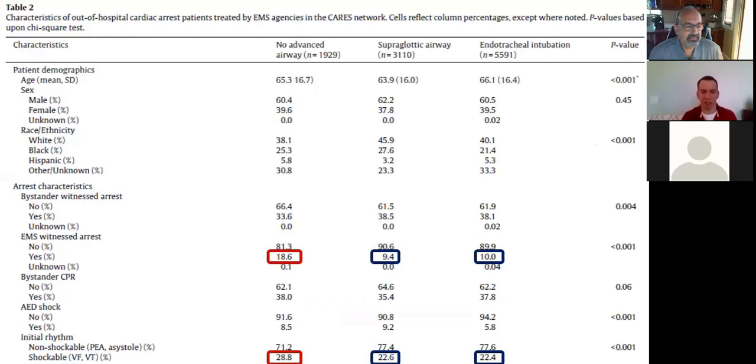There's a couple arguments against that when you looked at this. One of them was that the BVM group, more of those patients had an EMS witness arrest. 18.6% of the BVM group versus 9.4% of the supraglottic and 10% versus the endotracheal intubation. And also there was more shockable rhythms in the BVM group versus the other two. And we know having a shockable rhythm does better than asystole or a PEA group.